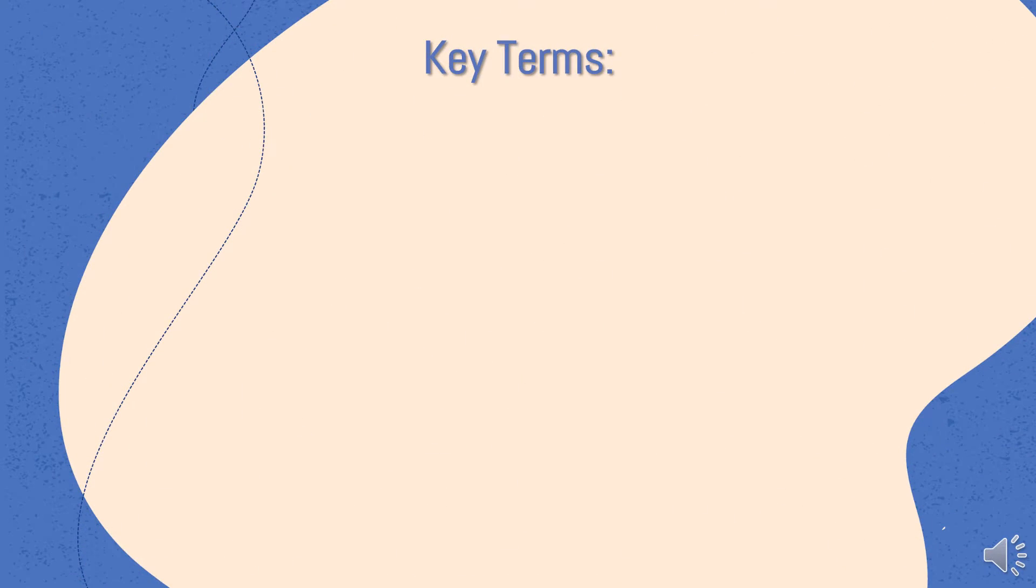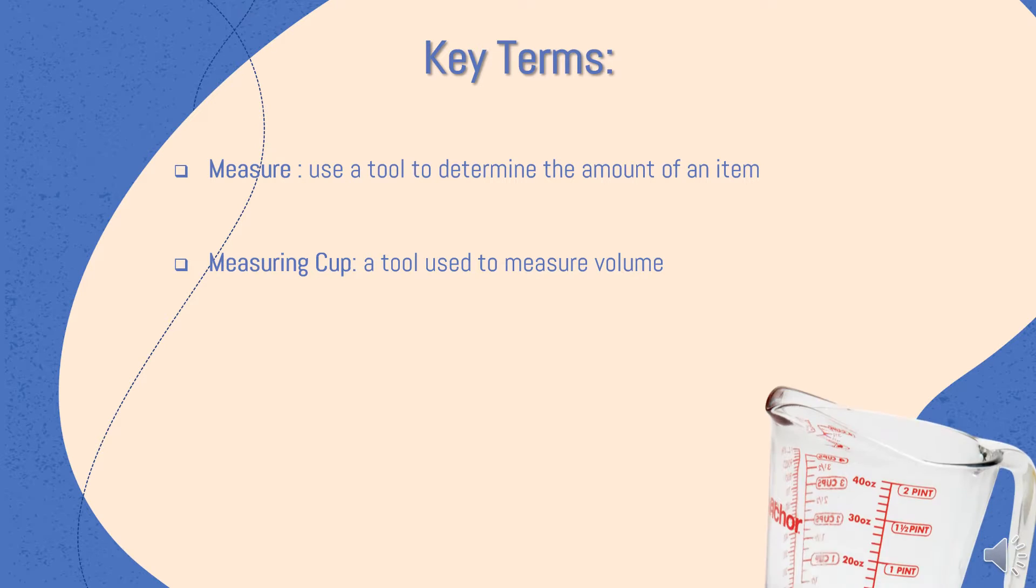Here are the key terms. Measure: use a tool to determine the amount. Measuring cup: a tool used to measure volume. A measuring cup might look like this.